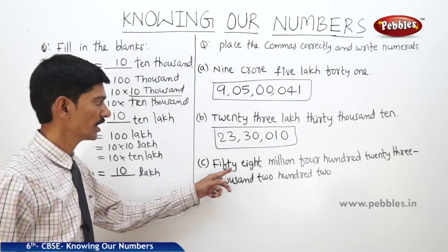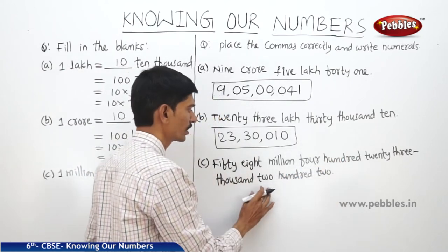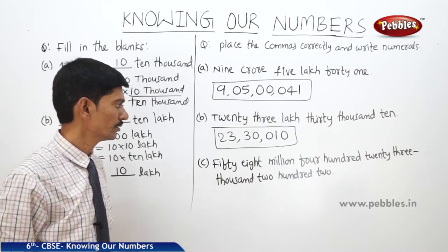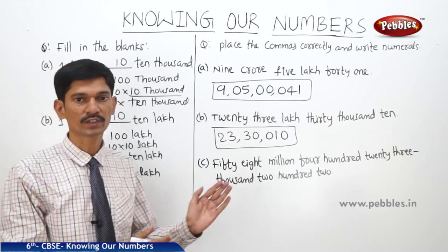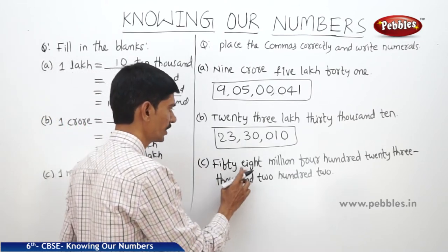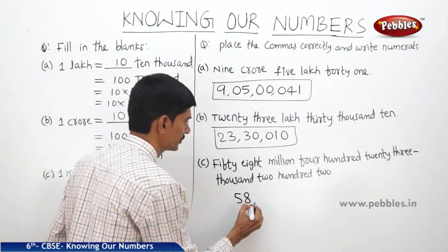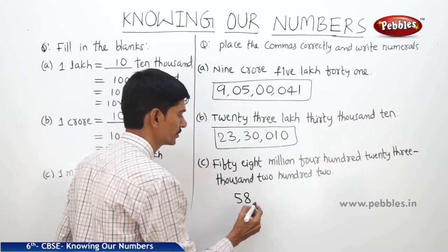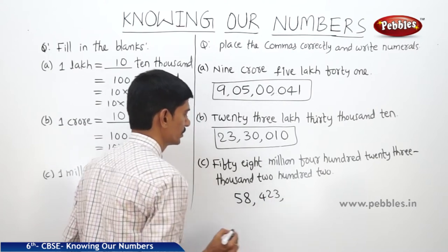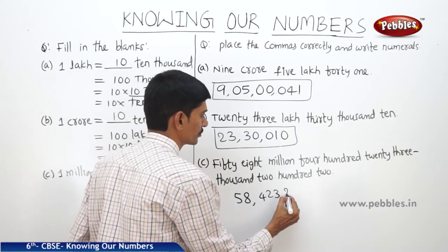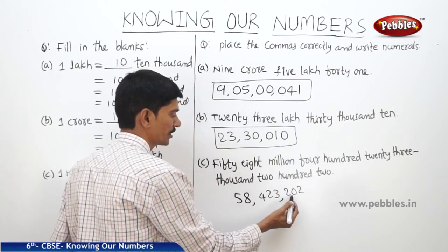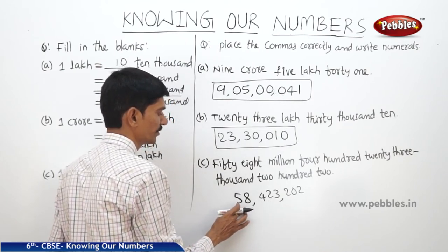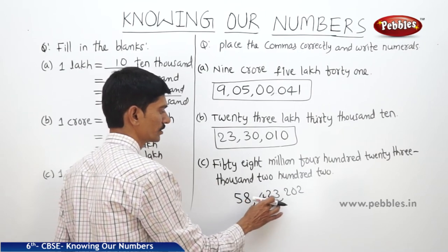Next: 58,423,202. This is according to the international system of numeration, so we use commas after every 3 digits from right. 58,000,000 — first we write 58, then 423, then 202. Using commas after every 3 digits from right, this is read as 58,423,202.